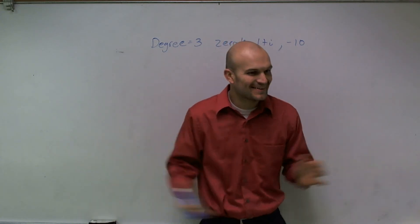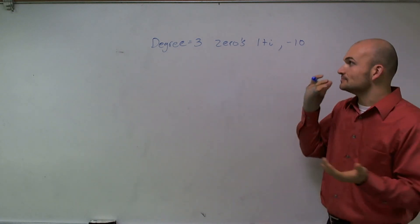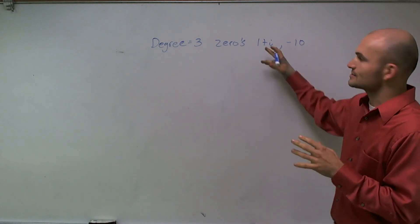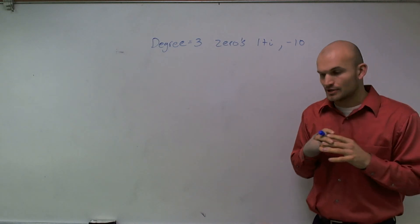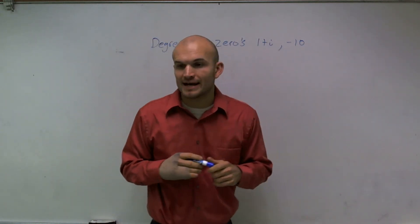Okay, what I'd like to do is show you how to find a polynomial when given zeros. It looks like we have the imaginary zero or a complex zero, and then also we have a real zero of negative 10.